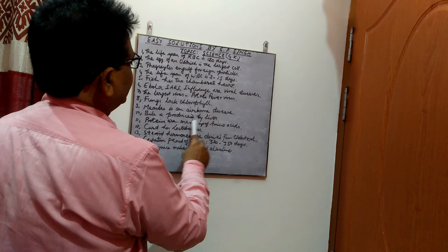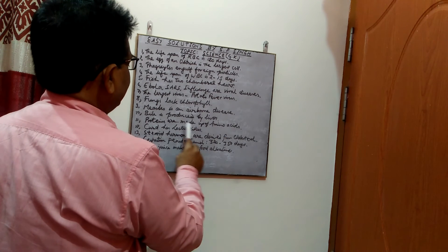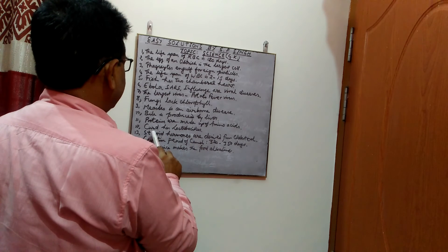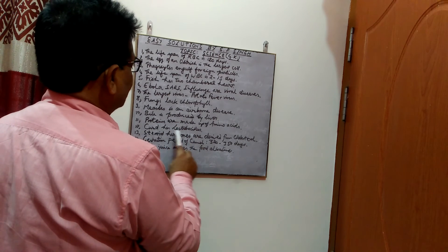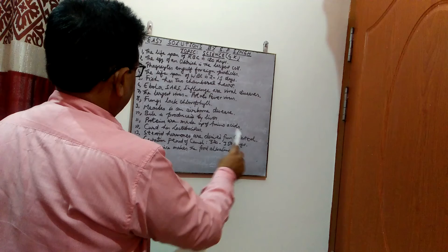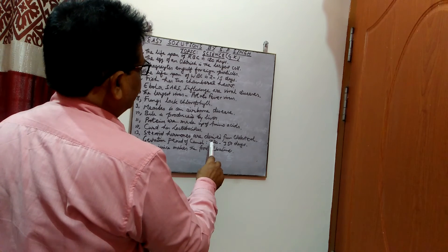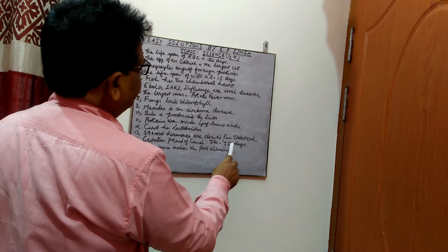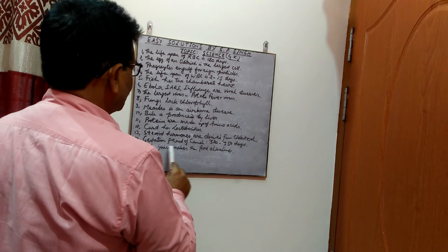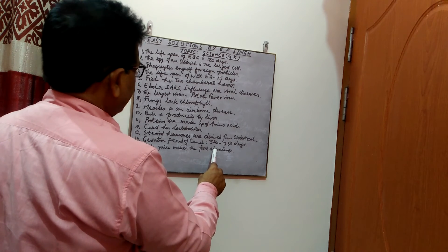Proteins are made up of amino acids. Curd has Lactobacillus, a type of bacteria. Steroid hormones are derived from cholesterol. The gestation period of a camel is 320 to 350 days. Bile juice makes the food alkaline.